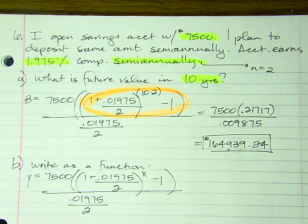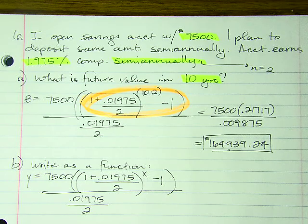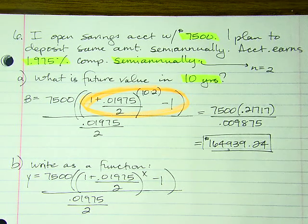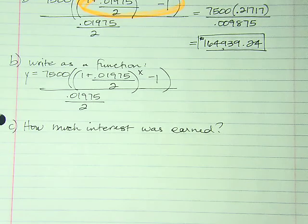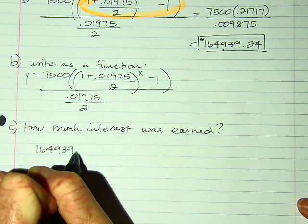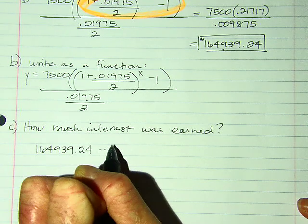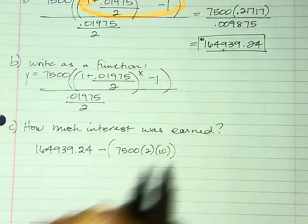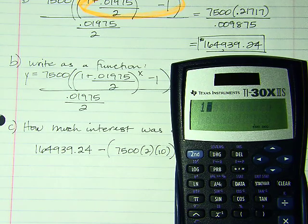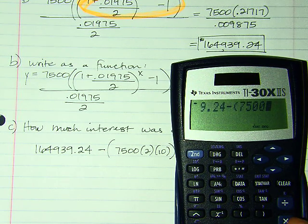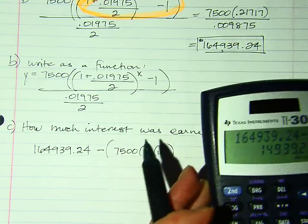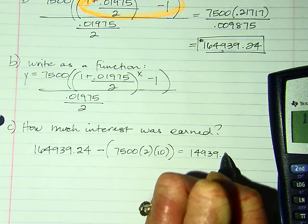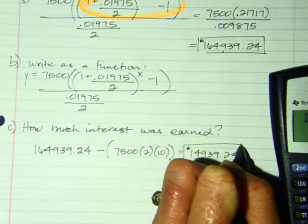Part C: how much interest was earned? She has $164,939.24 minus she deposited $7,500 twice a year for 10 years — that's $7,500 × 2 × 10. So $164,939.24 minus $150,000 in deposits equals $14,939.24. She made about $15,000 in interest.